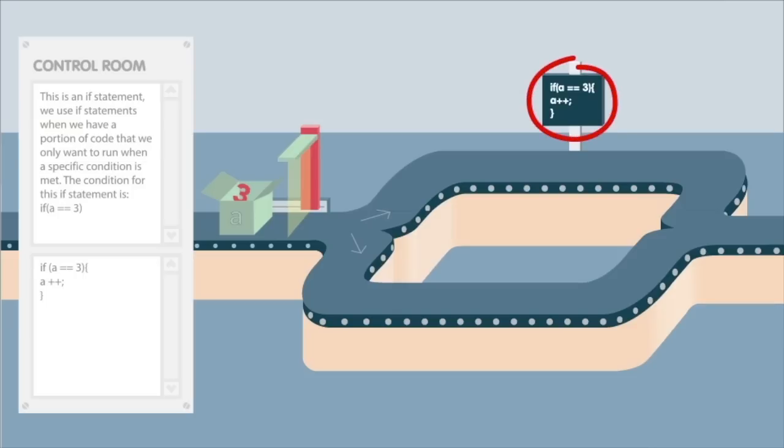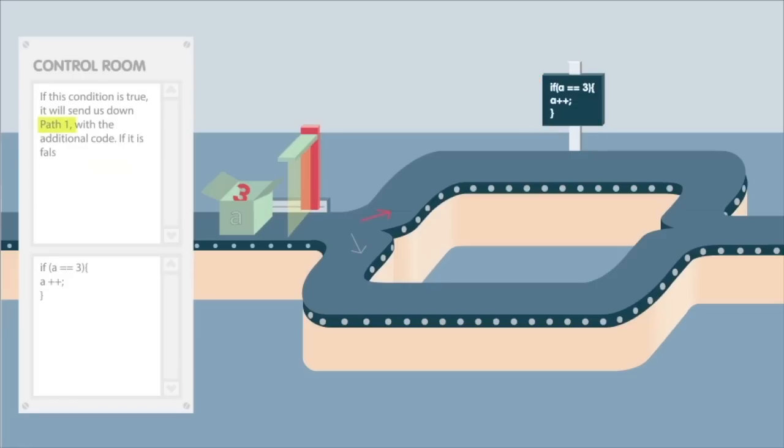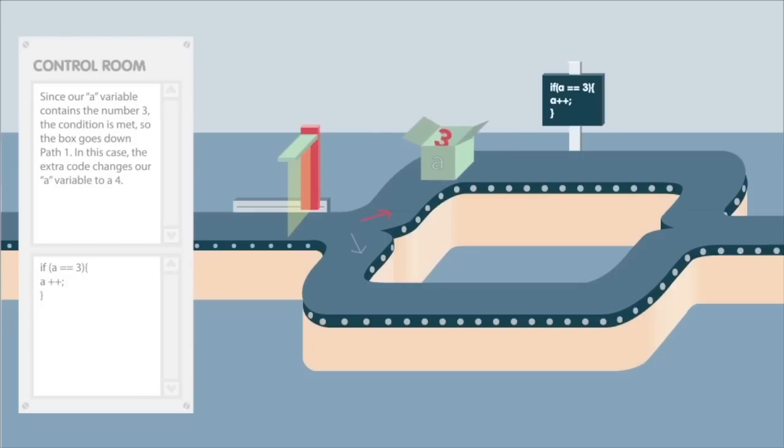The condition for this if statement is if A is equal to 3. If this condition is true, it will send us down path 1 with the additional code. If it is false, it will send us down path 2, which contains no code. Since our A variable contains the number 3, the condition is met, so the box goes down path 1.